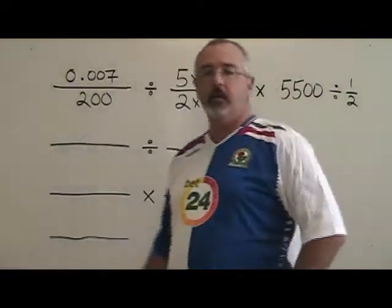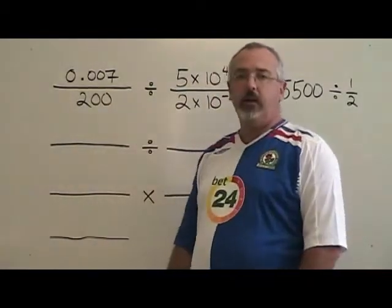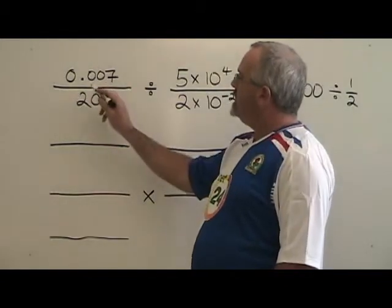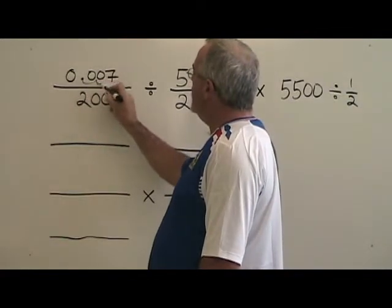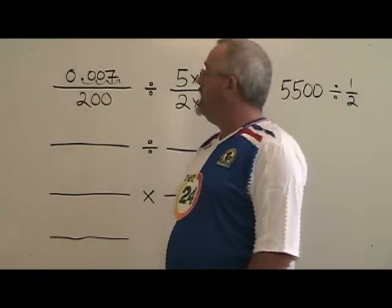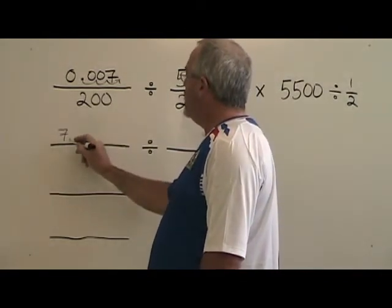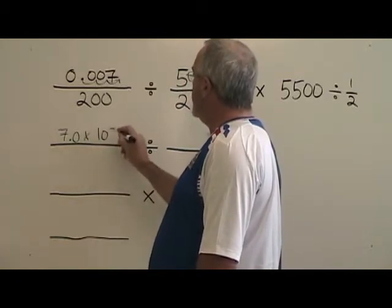The first thing to do is to convert each of the numbers into scientific notation if they're not already in scientific notation. So with 0.007, I move in my decimal 1, 2, 3 spaces to the right. So this becomes 7.0 times 10 to the negative 3.